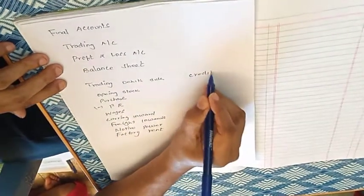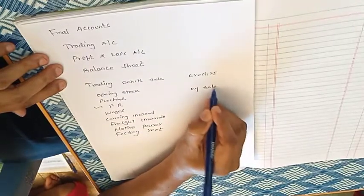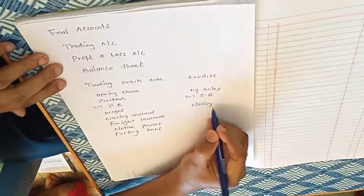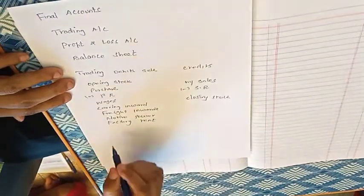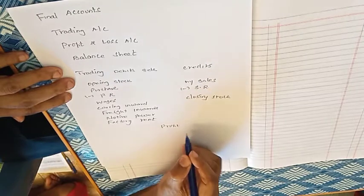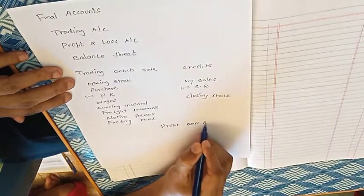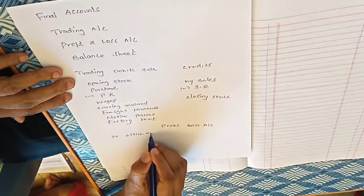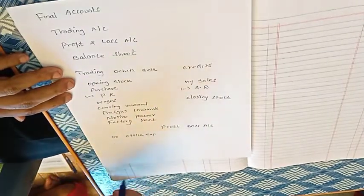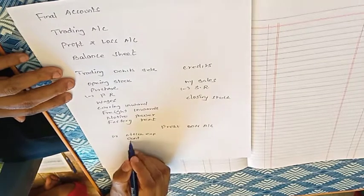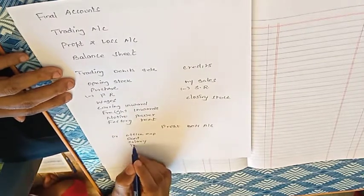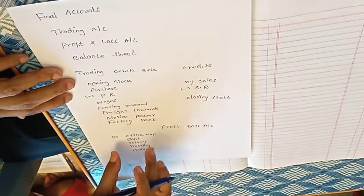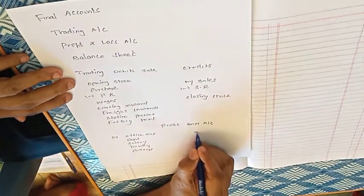On the credit side of the trading account: Sales minus Sales Return, plus Closing Stock. Moving to the Profit and Loss Account — on the debit side we have office expenses, office rent, salary, traveling expense, and postage. On the credit side we record income.